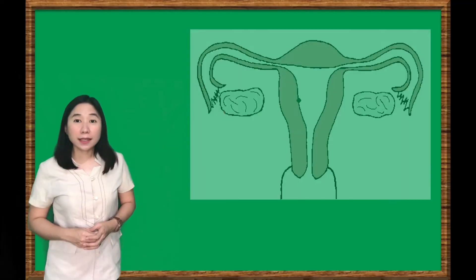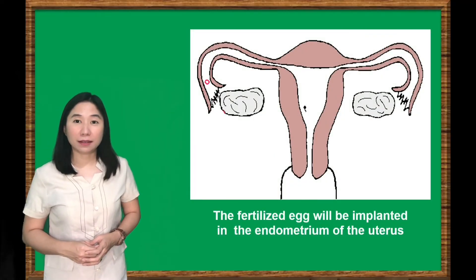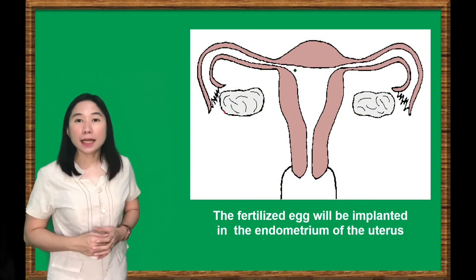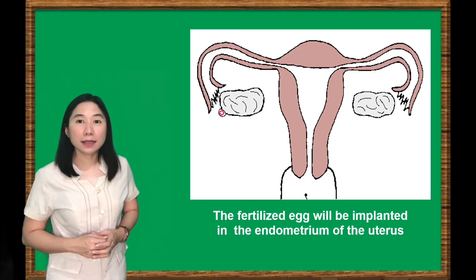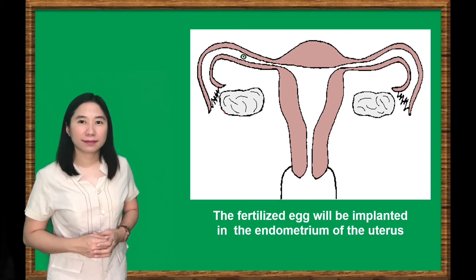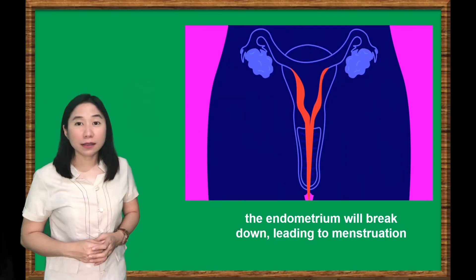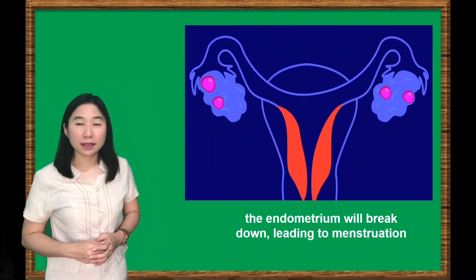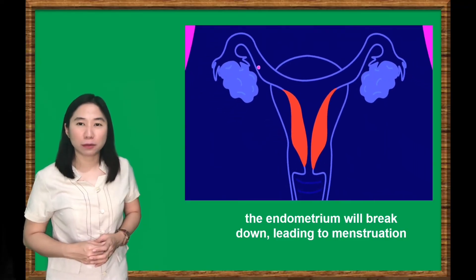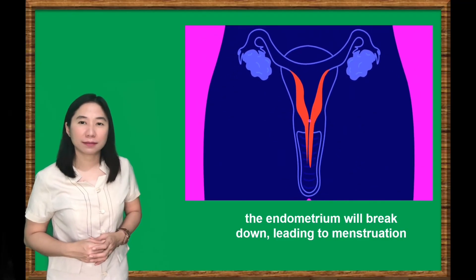If the egg cell is fertilized by a sperm cell, the fertilized egg will be implanted in the endometrium of the uterus. But if the egg cell is not fertilized, the endometrium will break down, leading to menstruation.